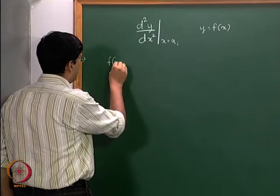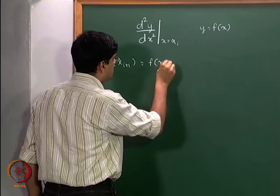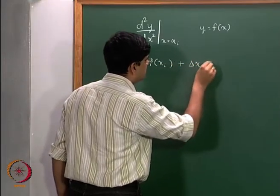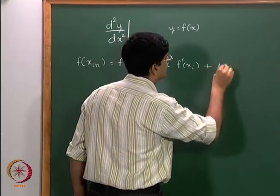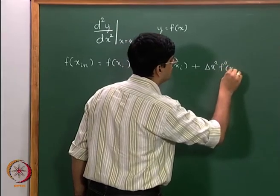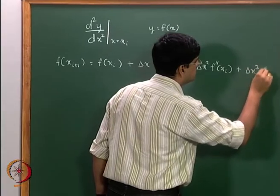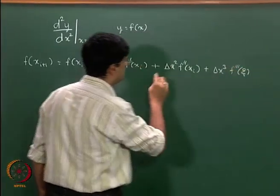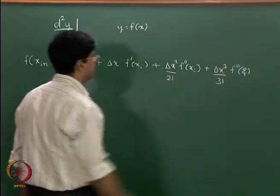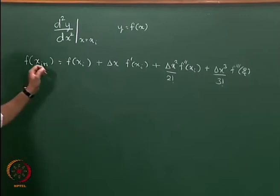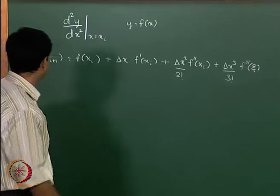We want to expand f(x(i+1)), which is f(x(i)) plus delta x times f'(x(i)), plus delta x squared times f double dash of x(i) divided by 2 factorial, plus delta x cubed times f triple dash of zeta divided by 3 factorial. So this is the overall expression on expanding f(x(i+1)).